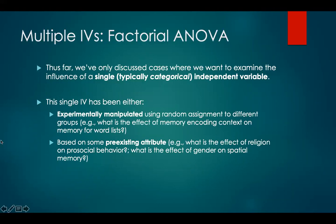So thus far, we've only discussed cases where we want to examine the influence of a single, typically categorical, independent variable. This single independent variable has either been experimentally manipulated — using random assignment to different groups, such as what is the effect of memory encoding context on memory for word lists, where we randomly assign participants to one of two memory encoding conditions — or it has been based on some pre-existing attribute, such as the effect of religion on prosocial behavior, or the effect of gender on spatial memory.